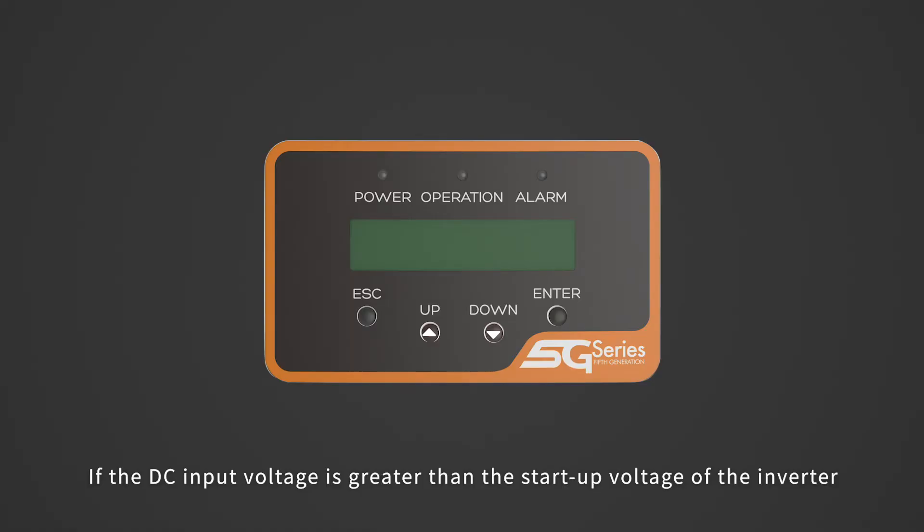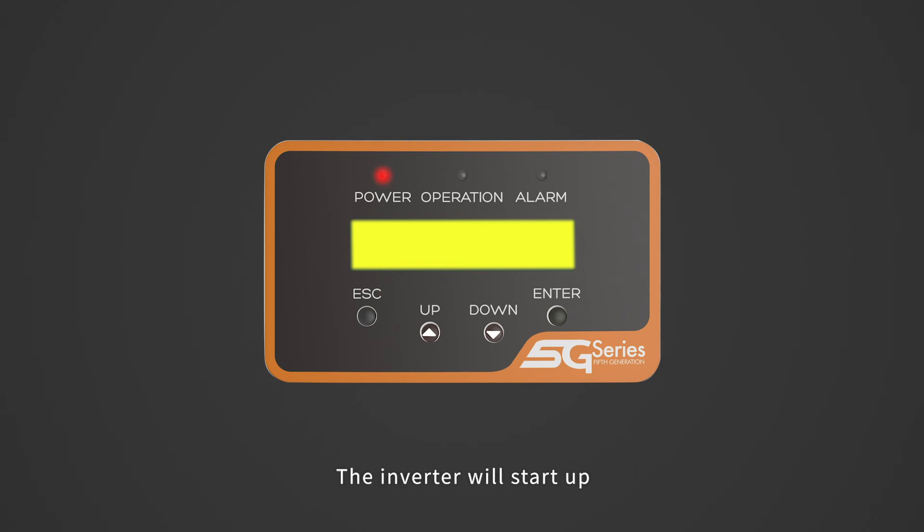If the DC input voltage is greater than the startup voltage of the inverter, the inverter will start up. After the self check is complete, the screen will show waiting. After the local mandatory delay ends, the inverter will start normal operation.